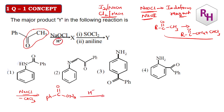This will undergo hydrolysis with H+. This is a very important point — when hydrolysis occurs, the ONa gets converted into OH. Hence, this is going to form Ph-C(=O)-OH. So when it is the sodium salt, you are going to get it as the carboxylic acid group.